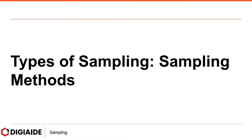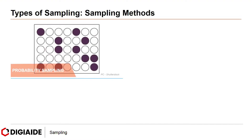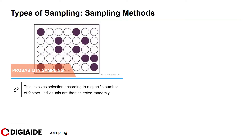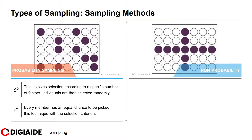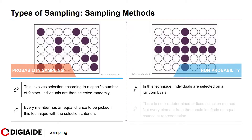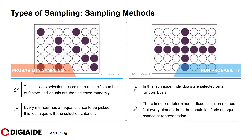Moving on to the types of sampling, or sampling methods. Broadly there are two types. One, probability sampling — this involves selection according to a specific number of factors, and individuals are selected randomly. Every member has an equal chance to be picked. Number two is non-probability sampling. In this technique, individuals are selected on a random basis with no predetermined or fixed selection method. Not every element from the population finds an equal chance at representation.